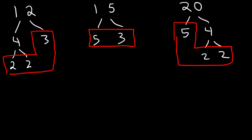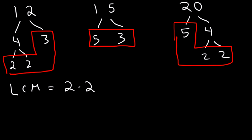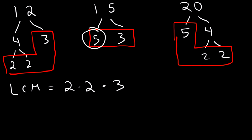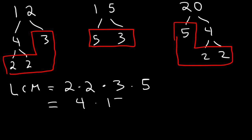So what is the LCM? How many 2s should we use? The most number of 2s in 12 is two 2s; there are none in 15, and the most in 20 is two 2s — so we use two 2s. The most number of 3s in any number is just one 3. The most number of 5s is one 5 (from 15 and 20). So: 2 times 2 is 4, 3 times 5 is 15, and 4 times 15 is 60. The LCM is 60.